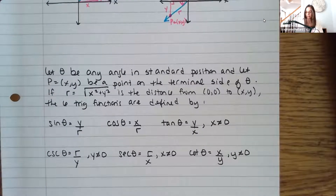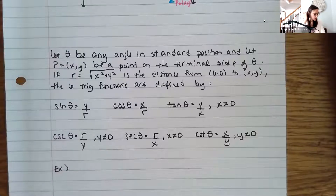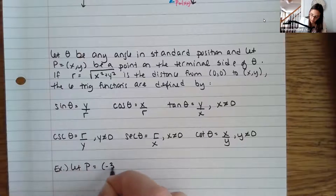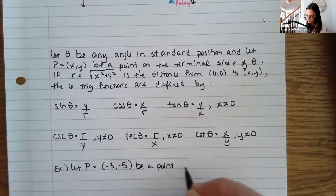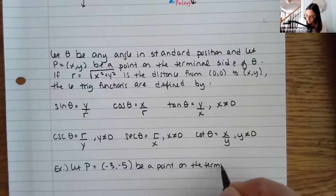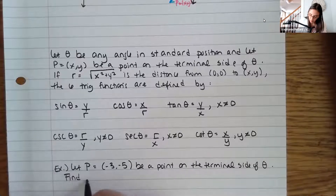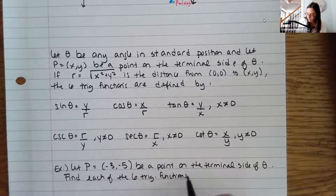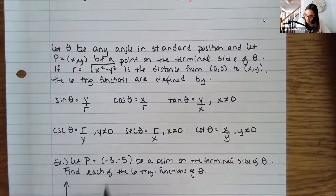Let's do an example. We're going to let P be the point (-3, -5), a point on the terminal side of theta. We want to find each of the six trig functions of theta. You don't need a picture here, but you can draw one if it helps. So I'm just going to do a very rough picture — negative 3, negative 5 — so that point is about right here.